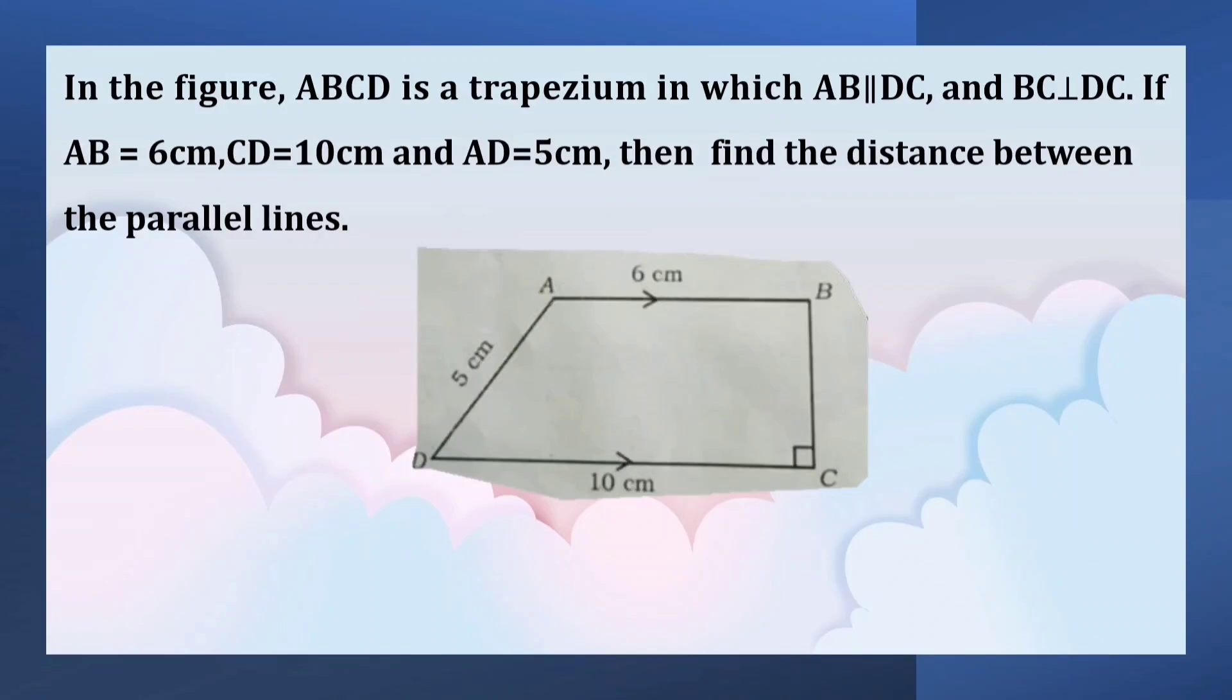In the figure, ABCD is a trapezium in which AB is parallel to DC and BC is perpendicular to DC.